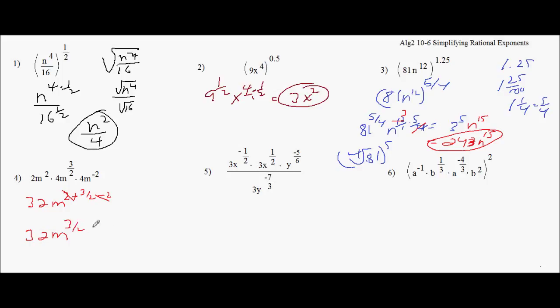So you get 32 m to the 3 halves. Well, you can say that this is really 32 times m to the 2 halves times m to the 1 half. Because 2 halves plus 1 half is 3 halves. And this is 1, right? So I guess you could say it's 32m times the square root of m. I'm good with that.